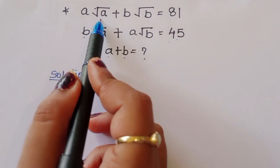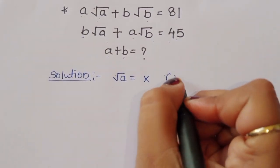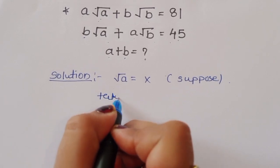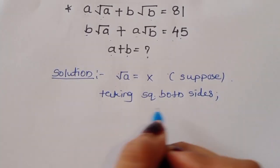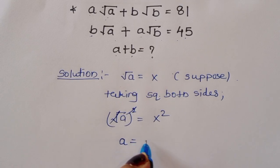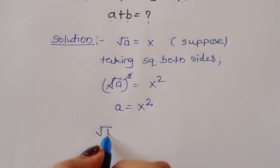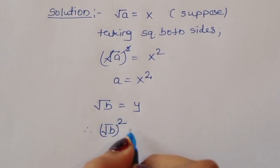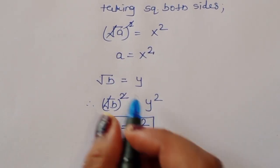First, let √a = x. Taking square of both sides, a = x². Next, let √b = y. Taking square of both sides, b = y². So this is the value of a and this is the value of b.